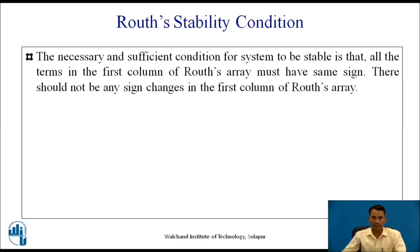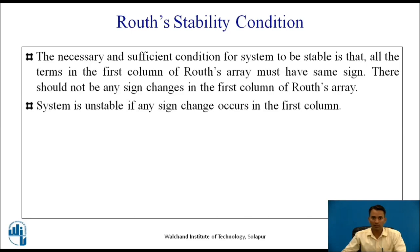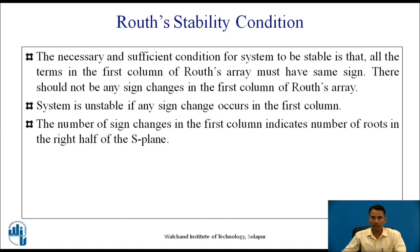The necessary and sufficient condition for a system to be stable is that all the terms in the first column of Routh's array must have the same sign, and there should be no sign changes in the first column. The system is unstable if any sign change occurs, and the number of sign changes indicates the number of roots in the right half of the s-plane.